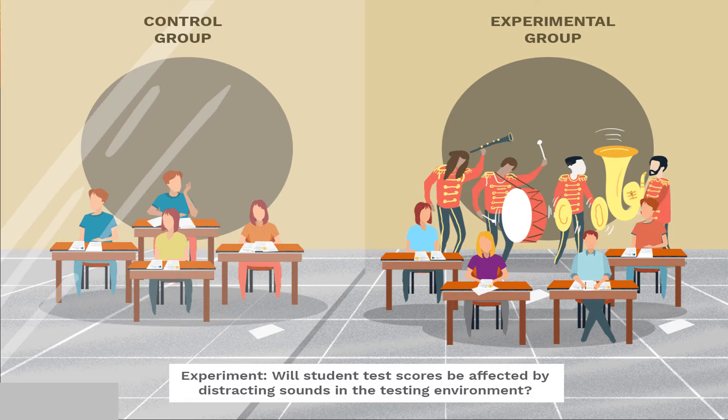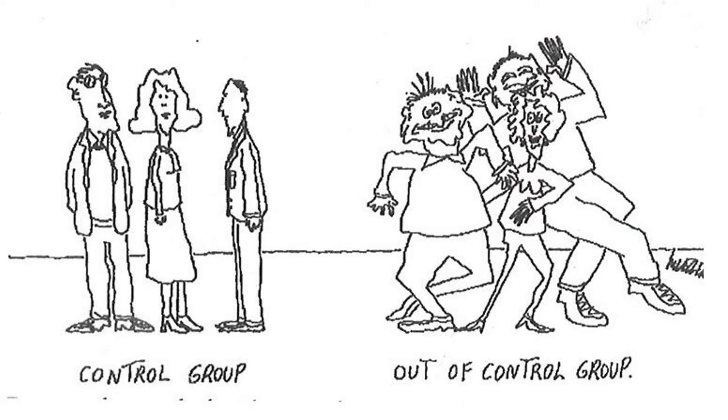Here's another example. Suppose we're interested in whether student test scores would be affected by distracting sounds. We randomly select a group of people and randomly divide them into two groups. The experimental group gets the independent variable — in this case, distracting sounds. The control group does not. We later compare their test scores to see if they're different. In a controlled experiment, we always have a control group as a comparison group to compare to the experimental group that gets the independent variable.